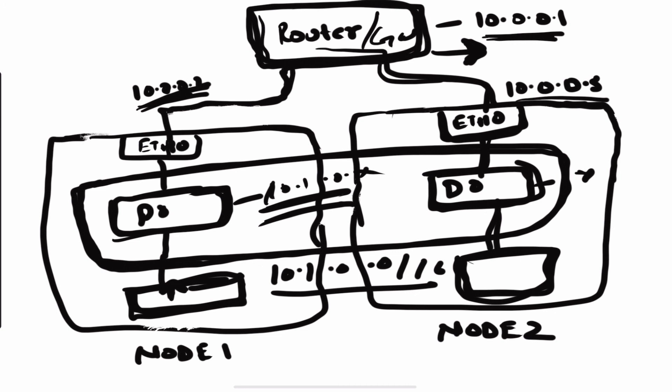We'll probably see the working of Flannel in more detail when we reach the networking part of Kubernetes. This is how networking is actually happening between pods. We'll get a better idea when we talk about service networking in Kubernetes — I'll try to cover service networking in the next video.